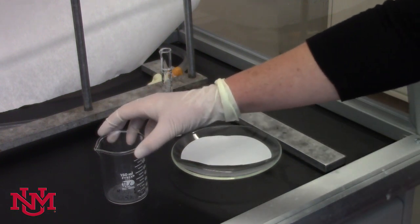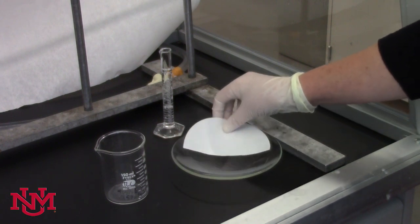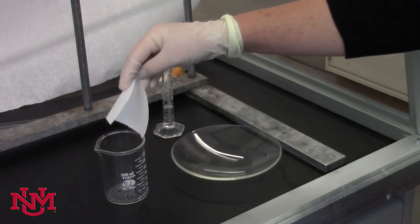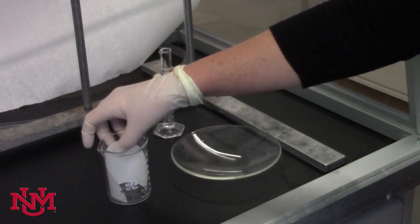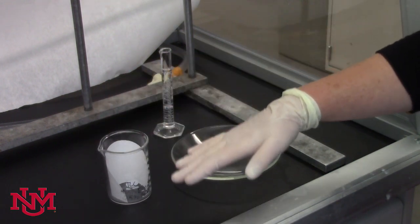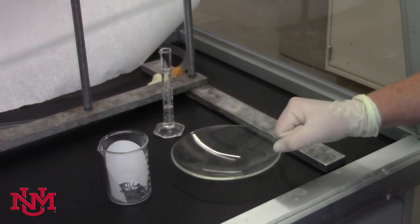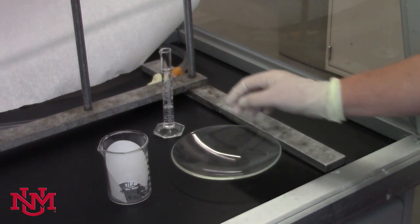You'll need a 150 ml beaker and a piece of filter paper. We're going to use that to line the beaker so that we can get the solvent to wick up the filter paper through capillary action and saturate the atmosphere.